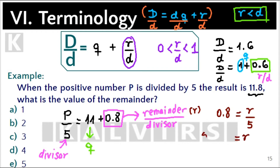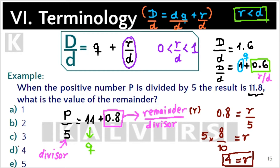Let r be the remainder. Therefore 0.8 equals r over 5. The remainder r equals 5 times 0.8. Since 0.8 equals 8 over 10, solving for r gives the remainder equals 4. Choice D is correct.